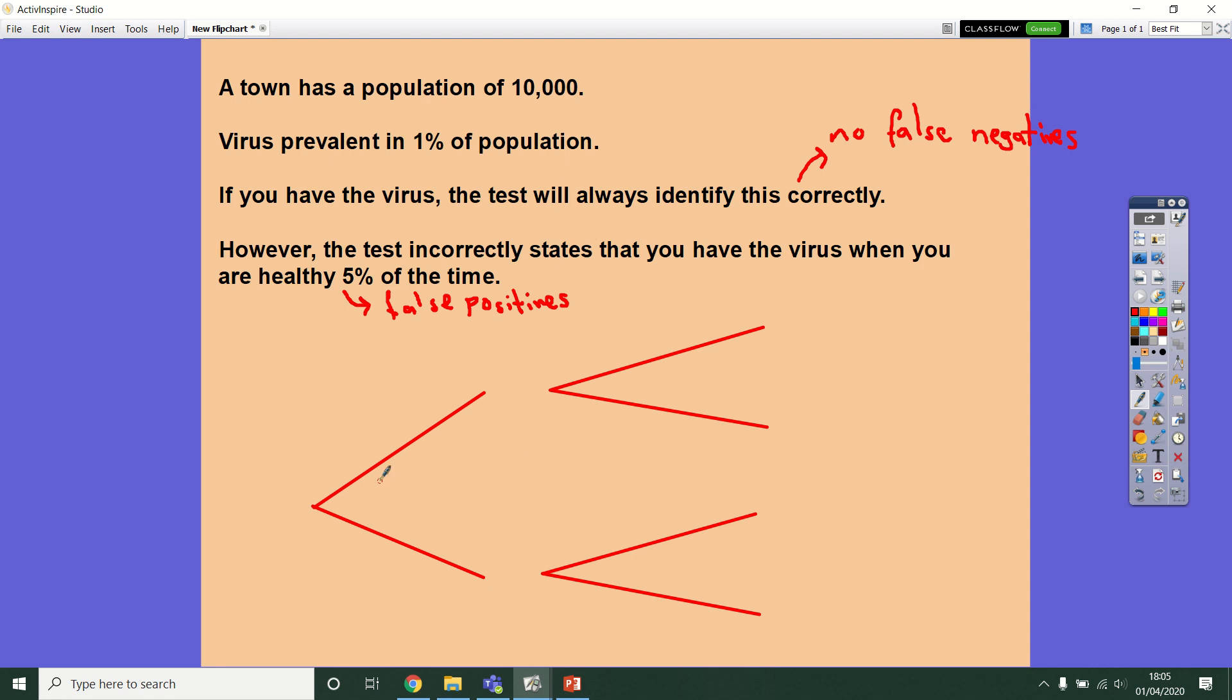So what we're going to do, we're going to draw a frequency tree for this information, and we're going to work out a conditional probability with what we've got there. So the first set of branches, this is going to be determining your state of health, if you've got the virus or not.